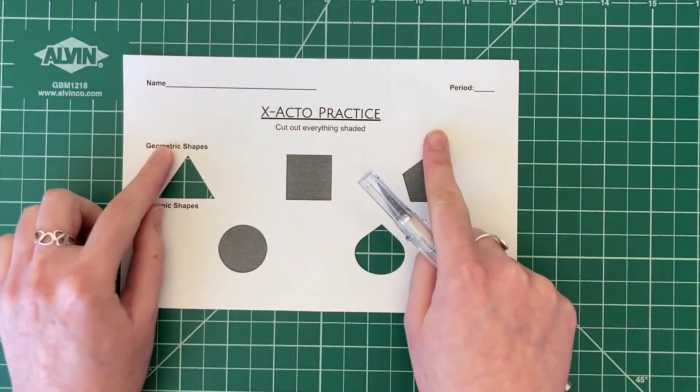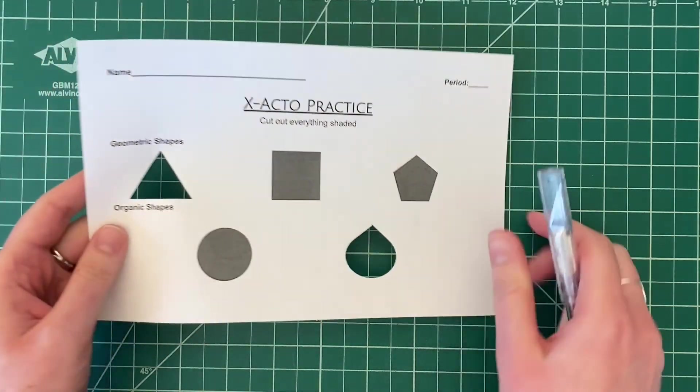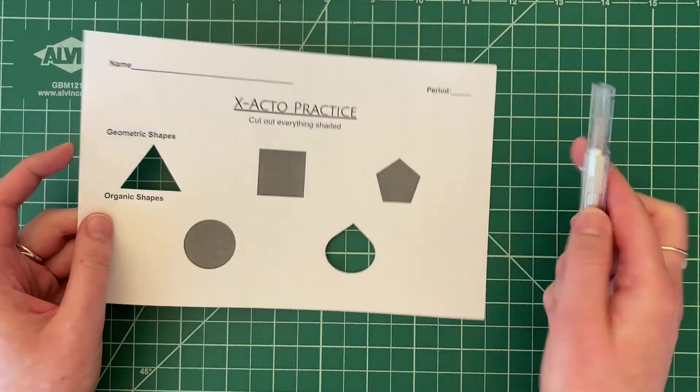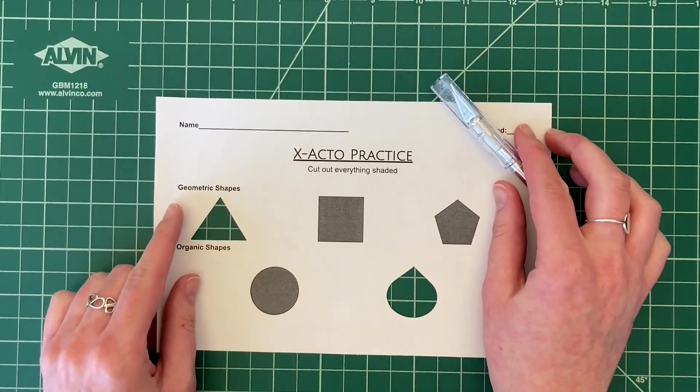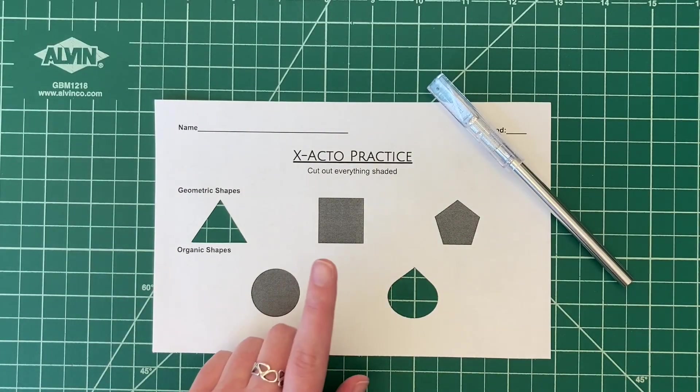At this point you should be able to go ahead and start practicing, start to fill this out. When you're done, you're going to go physically turn this into me, and I will give you the check to be able to use this tool in class moving forward. I look forward to working with you with this and seeing your practice sheet.